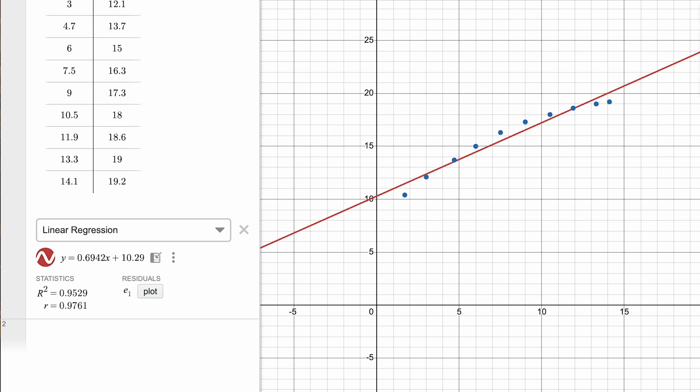You'll see an equation with coefficients specifically calculated to best fit your data, as well as measures of correlation. In this case, the line of best fit has a slope of 0.6942 and a y-intercept of 10.29.